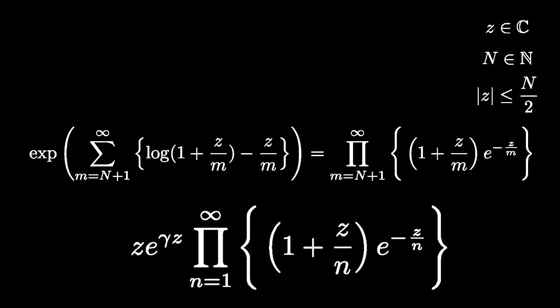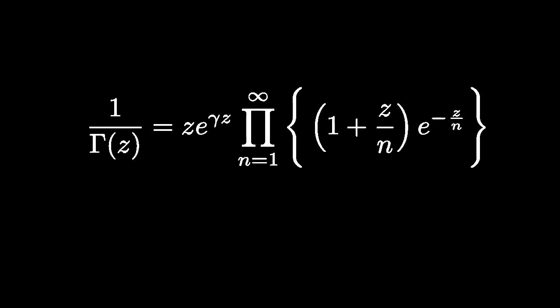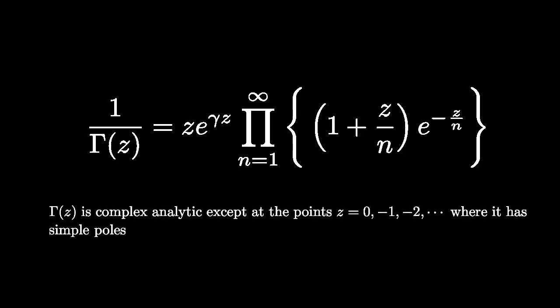The gamma function was defined by Weierstrass by the equation shown here. From this equation, it's apparent that the gamma function is complex analytic, except at the points Z equals 0, minus 1, minus 2, and any negative integer.